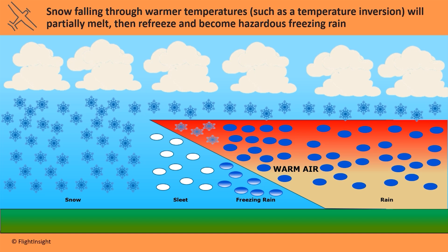If there's a layer of warm air, however, it'll melt into rain or sleet. If a temperature inversion exists, it'll partially melt but then refreeze as it continues to fall, forming freezing rain. This is an extreme hazard to aircraft as the structural icing resulting from freezing rain can quickly degrade flight performance.